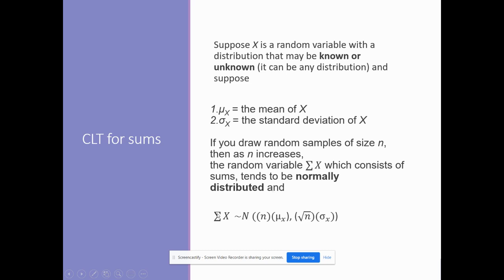All right, so this right here, that funky looking E means summation, and that means I've added all my X's together. They approximate the normal, and for my mean, it's going to be sample size times the mean I was given. For the standard deviation or the sampling error of this standard deviation, it's going to be the square root of n times the standard deviation I've been given.